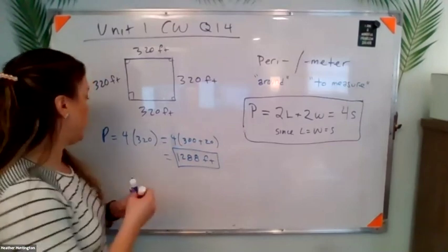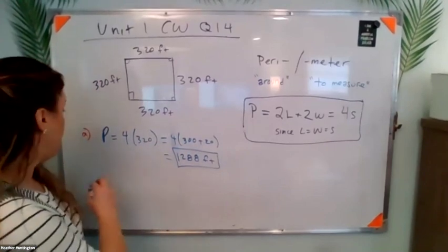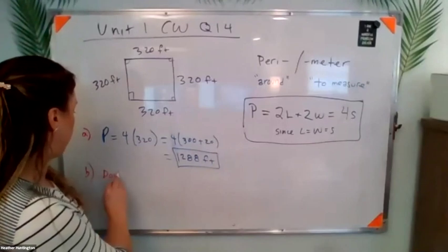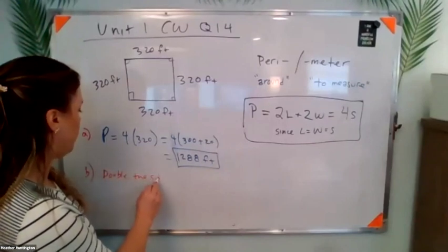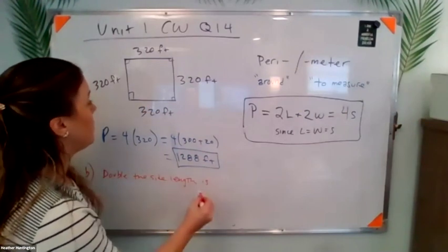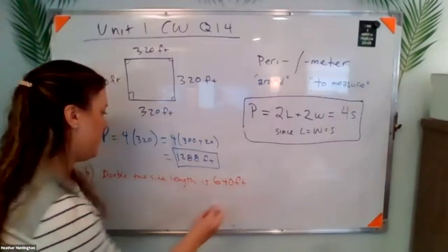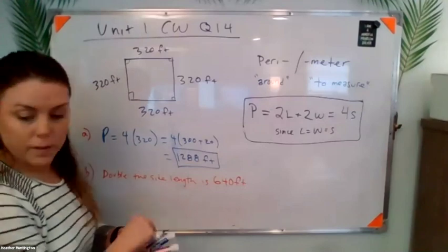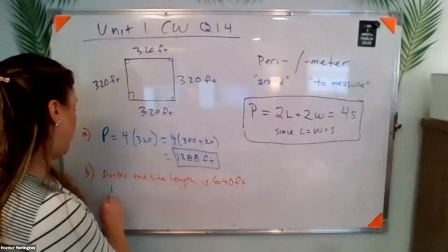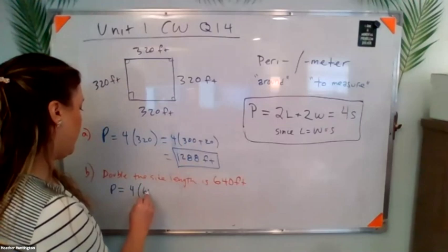Now the question next is, so this could be like part A, is what if we double the side? So double the side length is 640 feet.